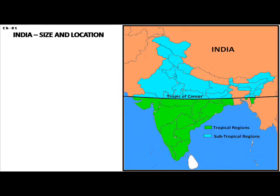As India is located entirely in the northern hemisphere, the Tropic of Cancer passes through the center of India. The Tropic of Cancer passes through the states of Gujarat, Rajasthan, Madhya Pradesh, Chhattisgarh, Jharkhand, West Bengal, Tripura, and Mizoram. The area south of the Tropic of Cancer falls in tropical zones, while the north part of the country, located north of the Tropic of Cancer, is called the subtropical area.